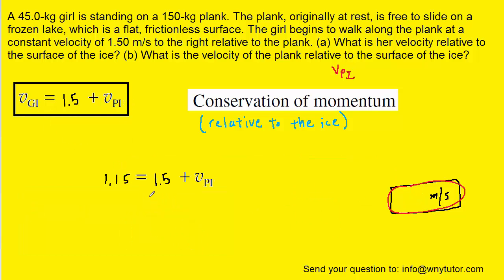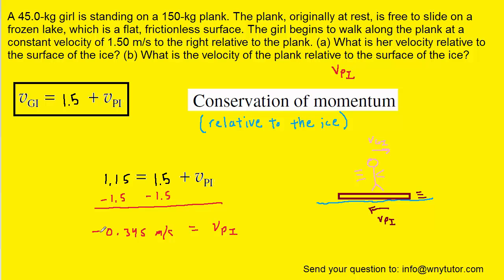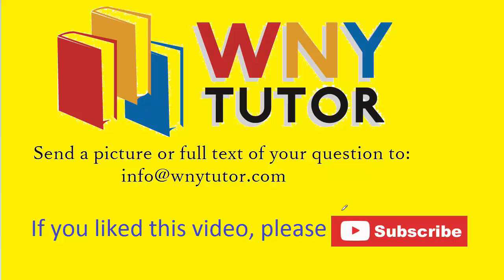We subtract 1.5 from both sides of the equation and get negative 0.345 meters per second for the velocity of the plank relative to the surface of the ice. The negative sign indicates the plank is sliding to the left as the girl moves to the right — recall her velocity relative to the ice was a positive value. Thanks for watching. Please subscribe to the channel for additional videos, and you're welcome to send in your own question to the email address shown on screen.